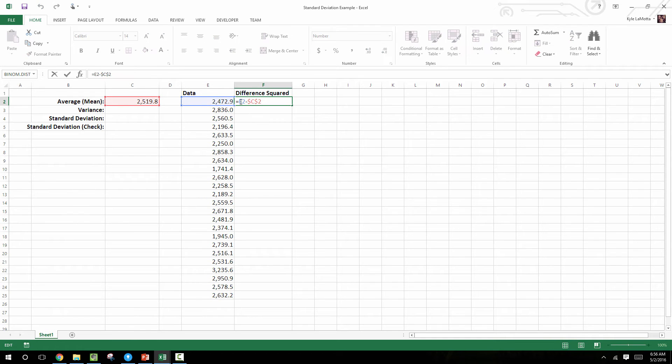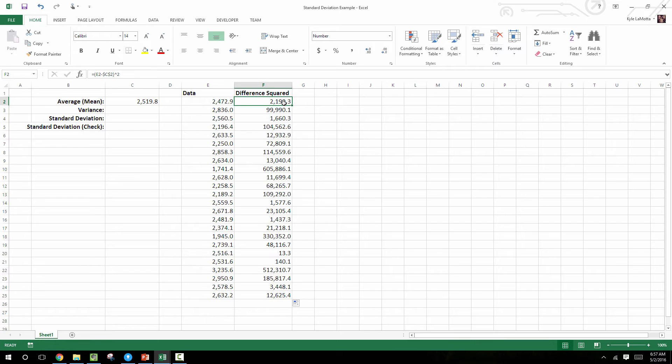And then after we take the difference, we're going to square the result, and copy that down for each data point in our data set. So just check a couple of these to show that each one is the actual value minus the average.